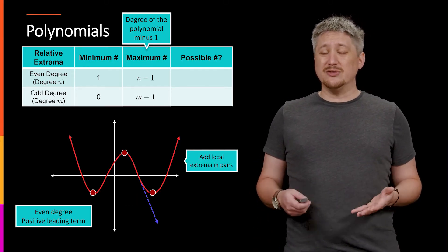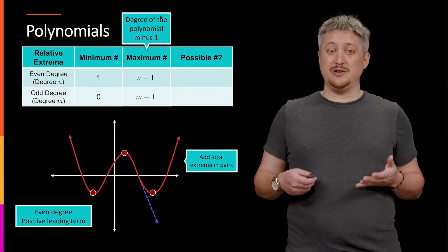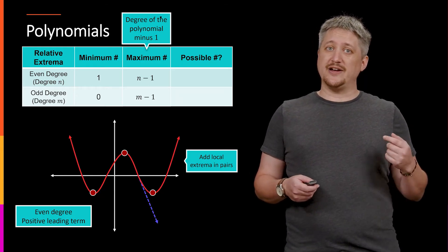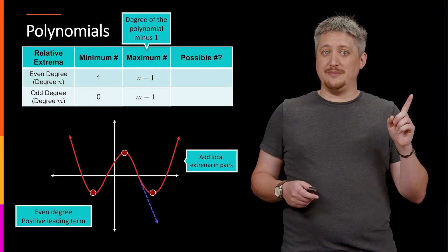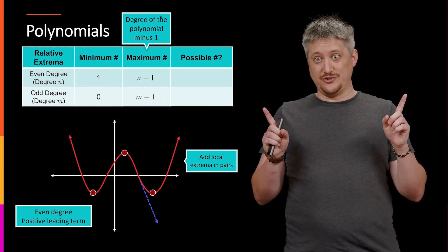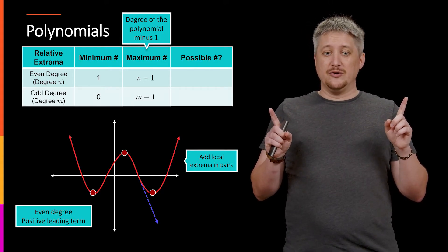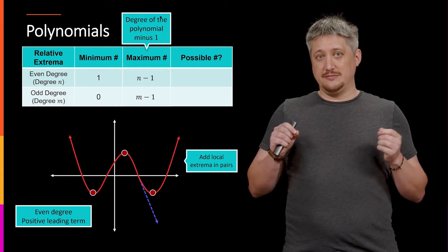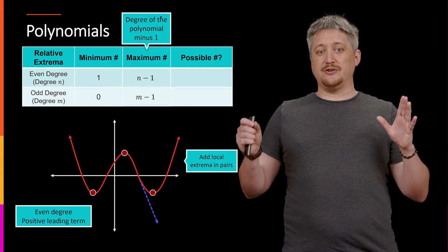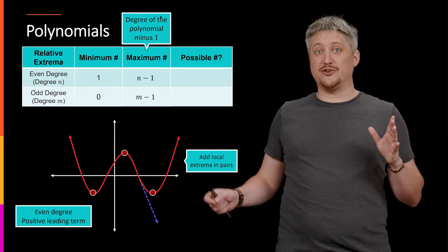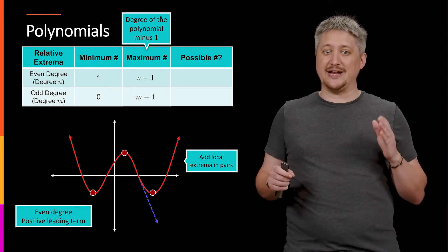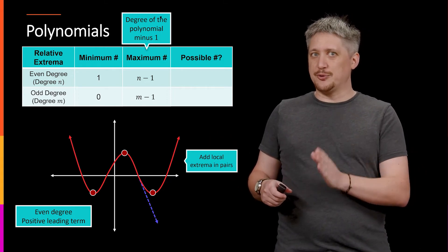And what this tells me is that I have to add on local extrema in pairs. So if I start going up with my even, then it has to eventually go up again. If I turn once, I'm going up, life is good. If I turn again, I'm now going down, I have to turn another time. So I can have one or I could have three, but I can't have two.